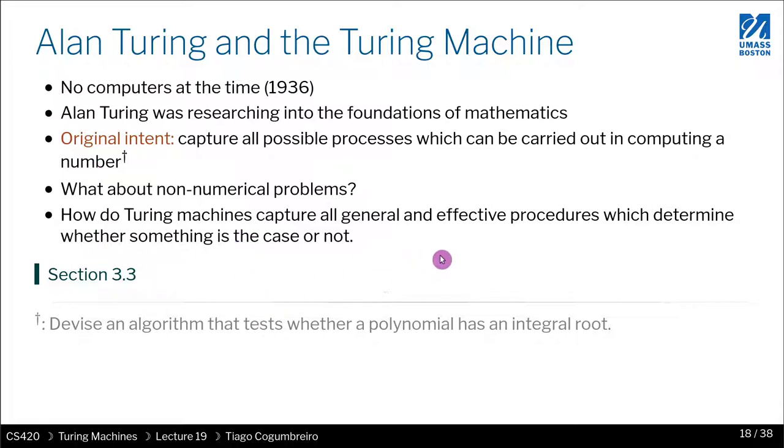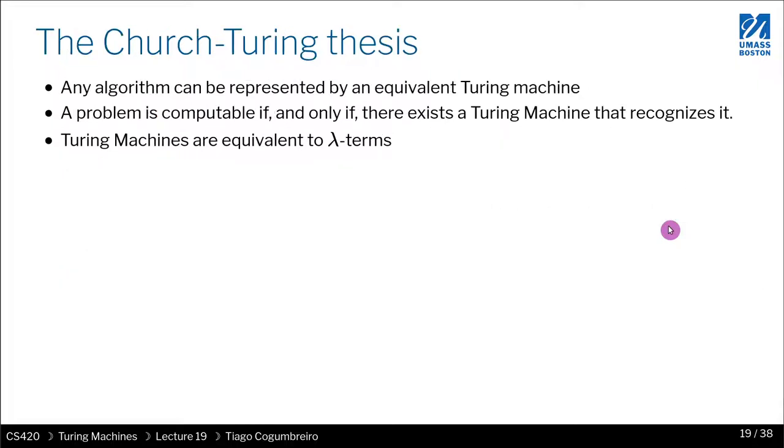So Turing machines are trying to capture all general and effective procedures which determine whether something is the case or not. And this is what is known as a decision procedure. That's what a Turing machine captures. The Church-Turing thesis is saying that any possible program that you might write must have an equivalent Turing machine that represents it.